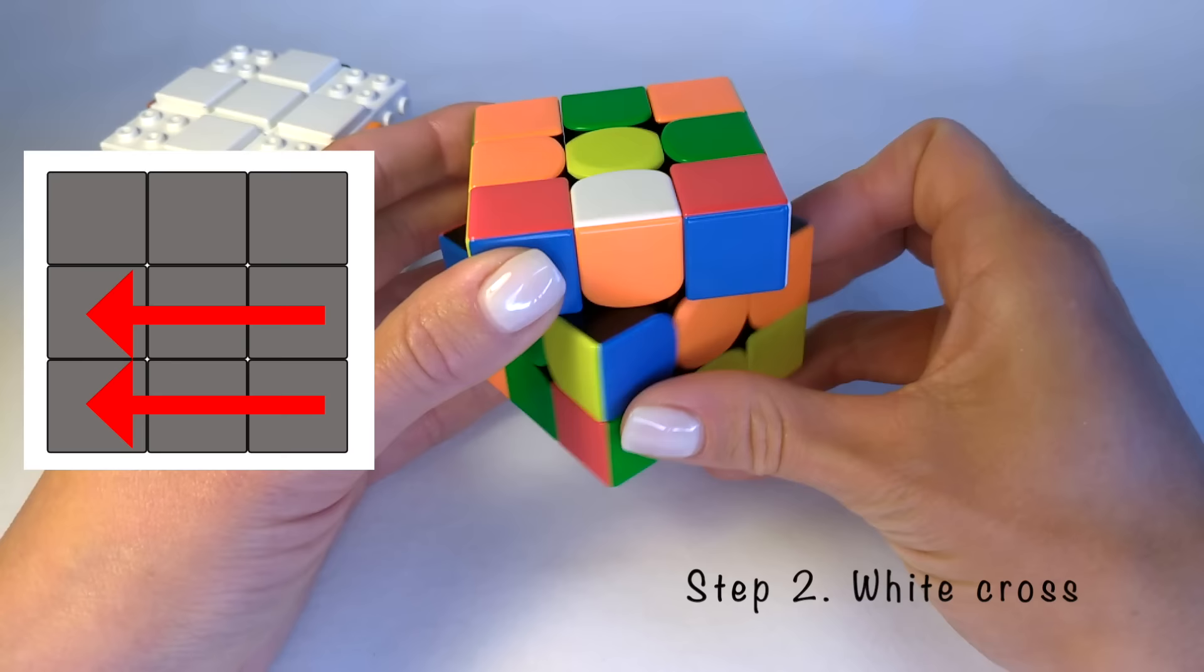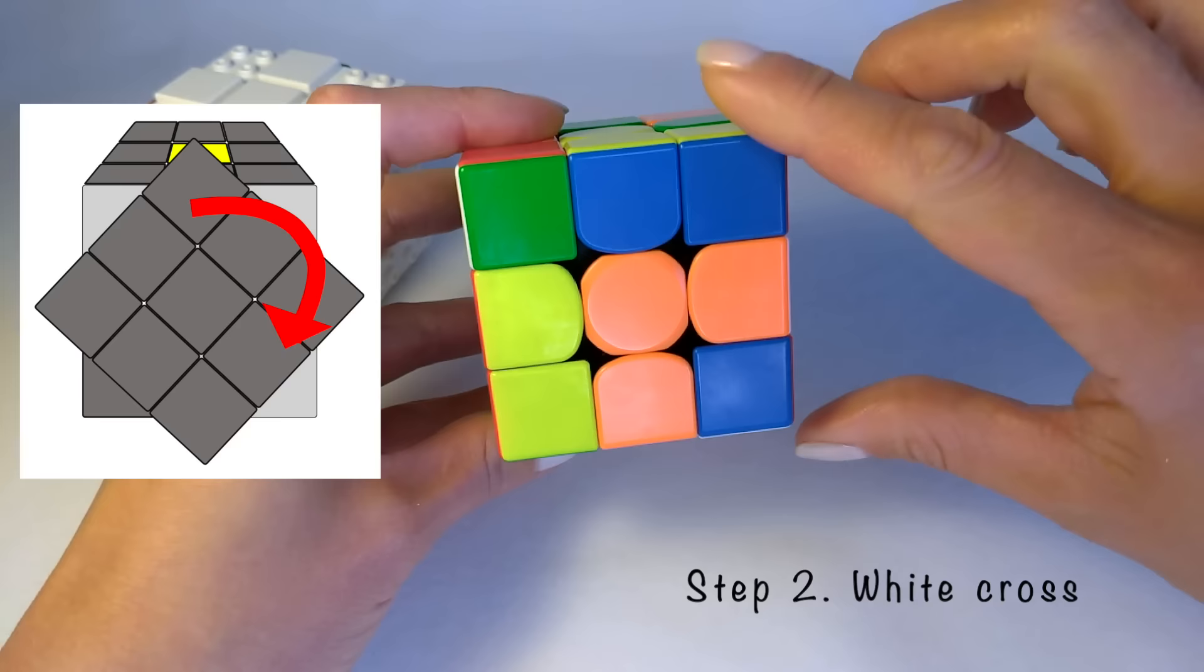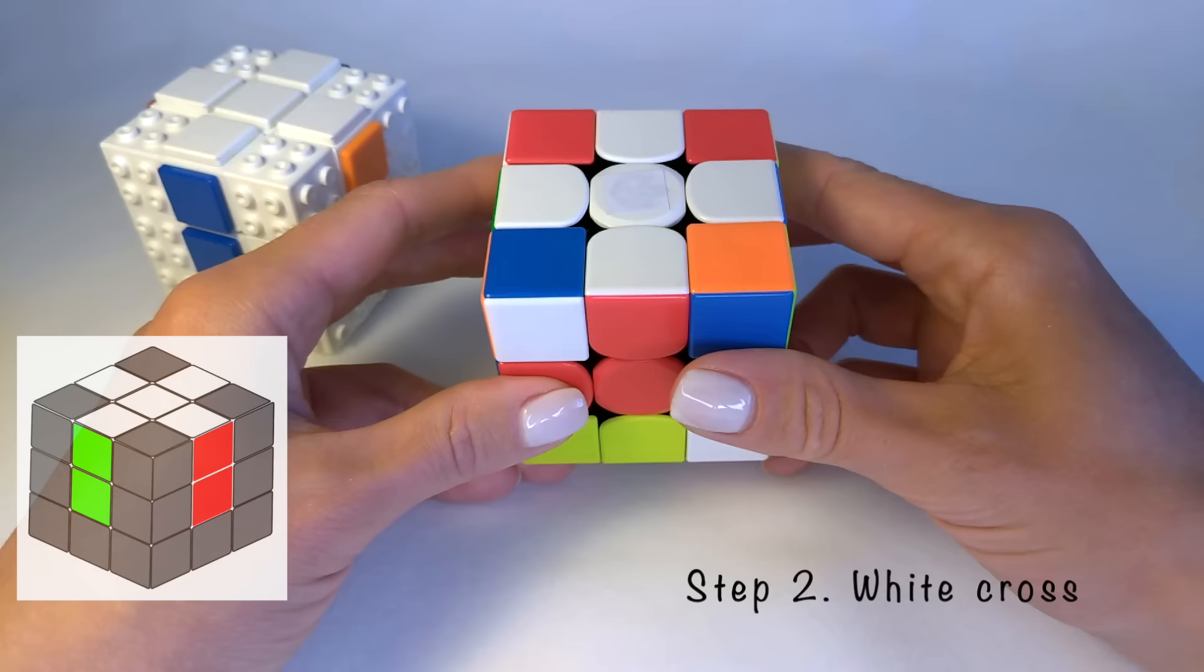Do these actions last time with the white orange edge. Rotate the bottom layers again. Match the orange edge with the orange center. Then turn this side clockwise twice. One. Two. Now the white orange edge is in the correct position and fits between white and orange centers.